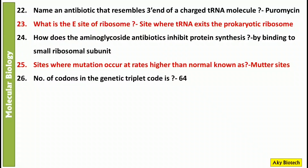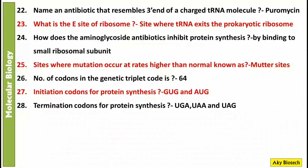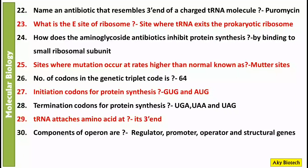Question 26: The number of codons in the genetic triplet code is 64. Question 27: Initiation codons for protein synthesis — there are two: GUG and AUG. Question 28: Termination codons — there are three: UGA, UAA, and UAG. Question 29: tRNA attaches the amino acid at its 3-prime end.